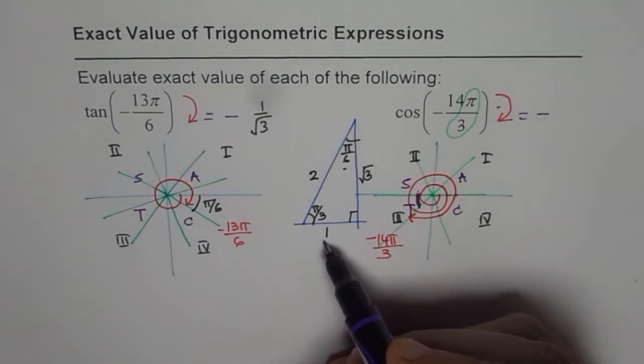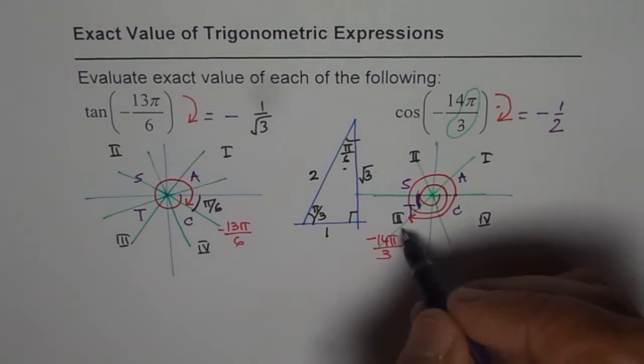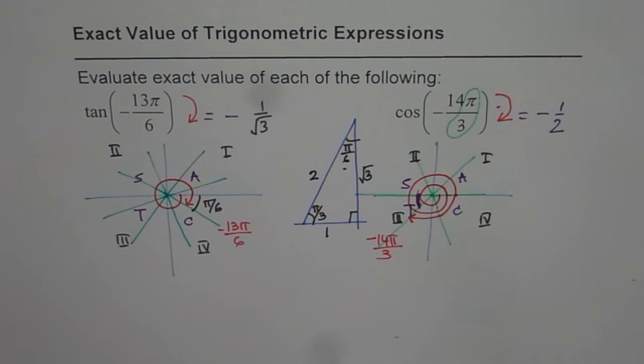π by 3 adjacent over hypotenuse, which is half. Sign is negative, since we are in quadrant 3. I hope that makes things absolutely clear.